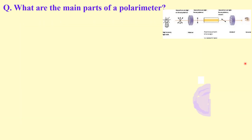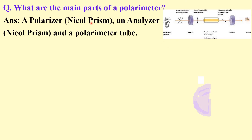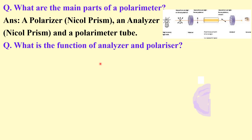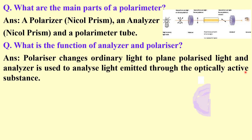What are the main parts of a polarimeter? A polarimeter has a polarizer, an analyzer, and a polarimeter tube. Both the polarizer and analyzer are Nicol prisms, and the polarimeter tube is filled with the solution. What is the function of the polarizer and analyzer? The polarizer changes ordinary light into plane polarized light, and the analyzer is used to analyze the light after it has passed through the optically active material (the solution), where the angle of rotation has changed.